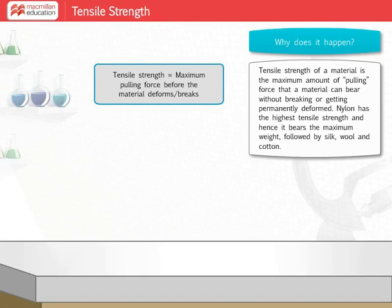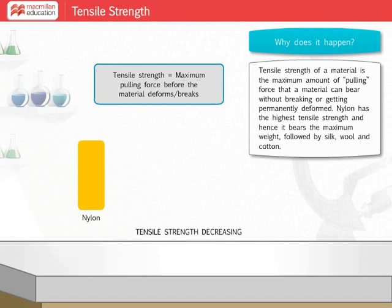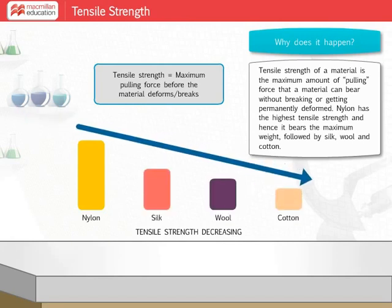In the fibers being examined, nylon has the highest tensile strength, therefore it can hold the maximum weight before getting torn. This is followed by silk, wool, and cotton. You have now successfully completed this experiment.